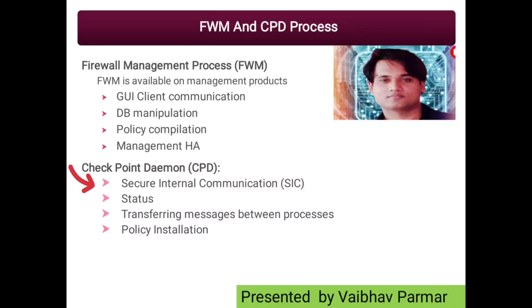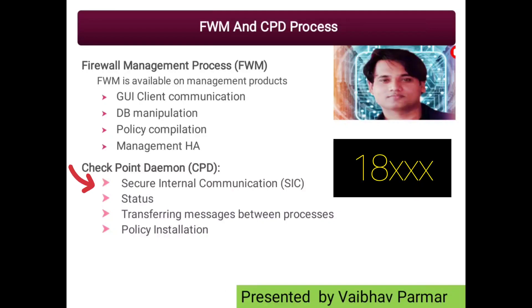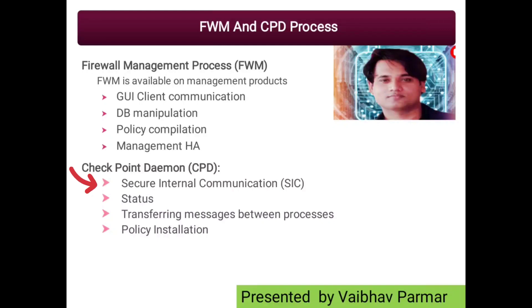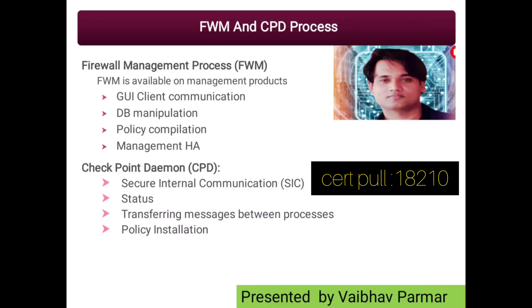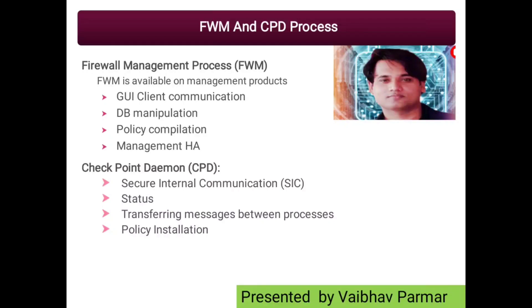Number one: CPD is used for Secure Internal Communication, or SIC functionality. SIC is a very important part of the communication that happens between the management server and the gateway — it has to be done via SIC. The ports where SIC listens are in the 18xx range: SIC uses port 18209, certificate pull uses port 18210, and certificate push uses port 18211.